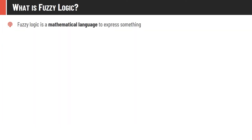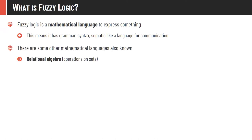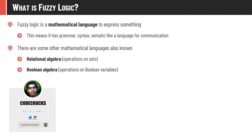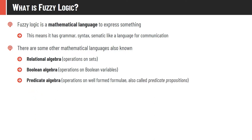Fuzzy logic is a mathematical language to express something — it has its own syntax, semantics, and grammar. Other mathematical languages include relational algebra (for set operations), Boolean algebra (for Boolean variables), and predicate algebra (for well-formed formulas). Similarly, fuzzy logic operates on fuzzy sets and is also known as fuzzy algebra.